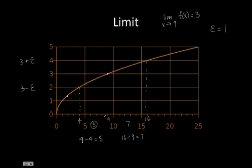Therefore, we have to choose 5 as our largest delta value because as long as we keep our x value between 4 and 9 plus 5, which equals 14, our f of x values will always fall between 3 plus epsilon and 3 minus epsilon. So our final answer is delta equals 5.